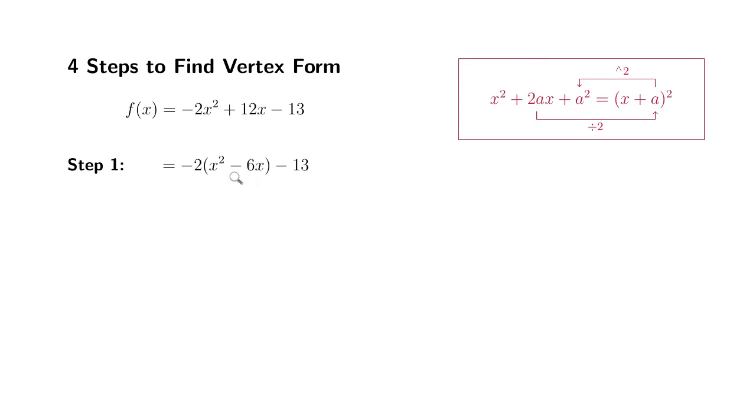In this particular case, we have negative 6. So divide by 2, negative 3, square that, you need 9. So step two, we're going to add and subtract 9. Inside the parentheses, we're going to add 9 and then subtract 9.